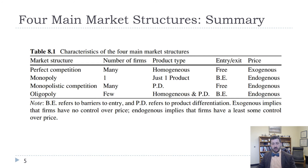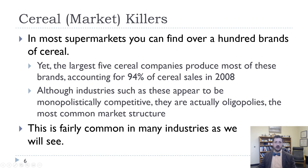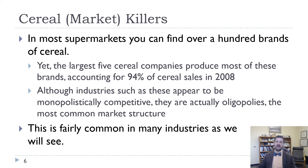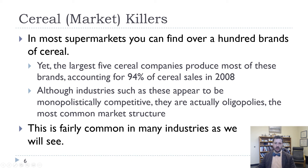This table summarizes these market structures. A lot of markets might look like monopolistic competition but are really oligopolies. If you think about the cereal market, we have lots and lots of brands of cereal — over a hundred brands — and yet only five cereal companies account for 94% of cereal sales in 2008. There are a lot of markets like this in the United States where we have lots of brands, lots of versions, and product differentiation, but they're actually controlled by oligopolies.